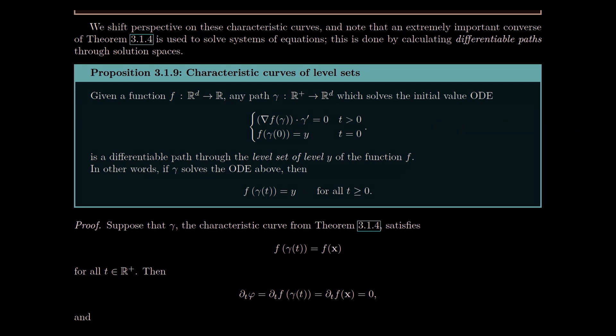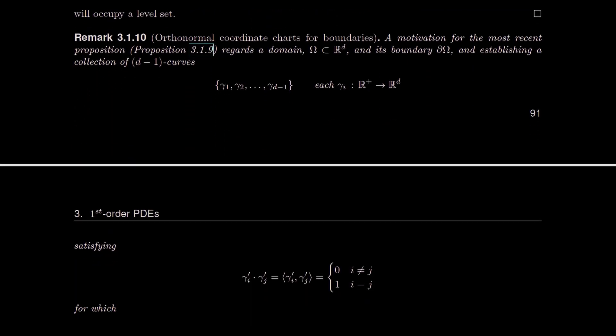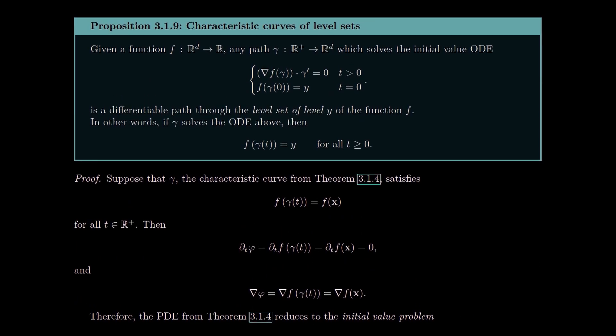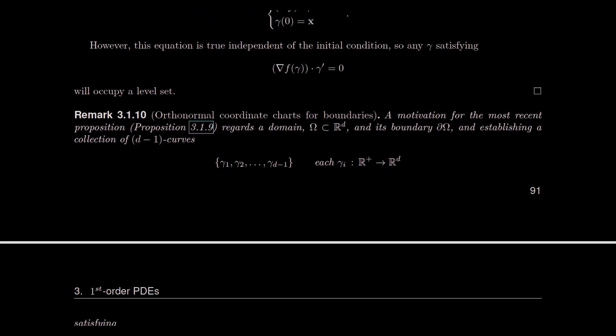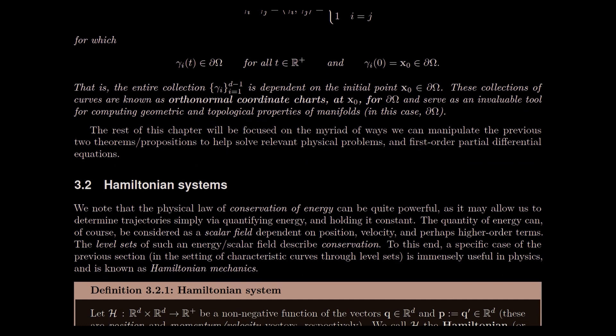This is useful because level sets and boundaries are the same thing, as we discussed in chapter one. So we have a way of parameterizing boundaries by solving a system of ODEs. If you've taken differential geometry, orthonormal coordinate charts on manifold boundaries require finding such curves. The next section will be Hamiltonian systems, where this proposition takes hold. I'll see you then.